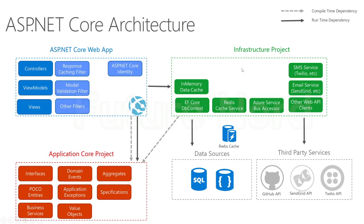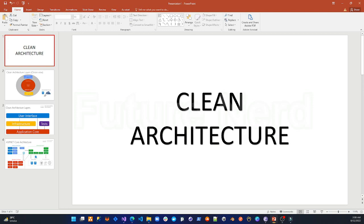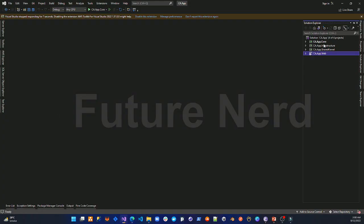The presentation layer would have the web application, API, or desktop application — everything related to user interaction is encapsulated in that layer. Let's see the layers in our code. This is a project based on clean architecture, and you can see we have a core layer, an infrastructure layer, and a presentation layer. I'll discuss the shared kernel layer at the end.